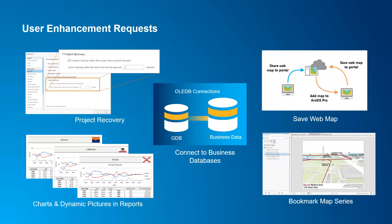Save web maps: now you can directly edit your web maps in ArcGIS Pro and save them directly to ArcGIS Online. Or, if you're an ArcGIS Enterprise user, you can save those definitions in Enterprise. This cuts out earlier work where, if you were editing a layer in a web map, to actually alter the presentation of the web map — the combination of base map and operational layers — you had to go into the portal to do the editing. Now you can do that completely within the ArcGIS Pro environment.